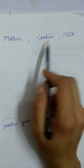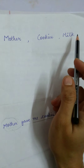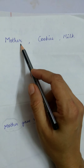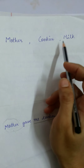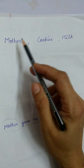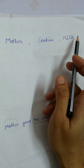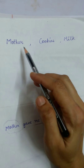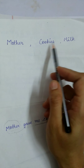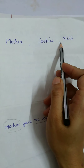Consider the words: mother, cookies, milk. When these three words are written, there can be so many combinations — mother gave me cookies with milk, mother ate cookies with milk, mother made cookies with milk. So with these three words, I can make any number of sentences, but if I use only these three words, am I able to communicate what I want to say? No.